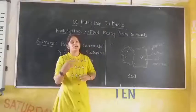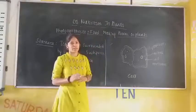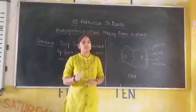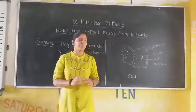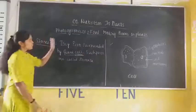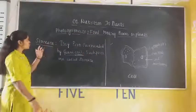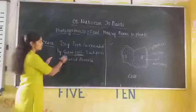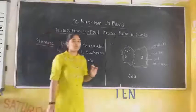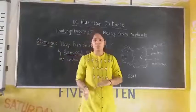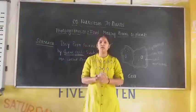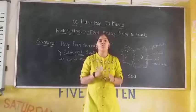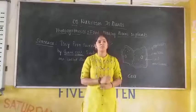You are going to study this cell in detail in the topic of transport in plants. But here, in photosynthesis, stomata are present. These stomata are tiny pores which are surrounded by guard cells. Such pores are called stomata. The stomata is helpful for the photosynthesis process.